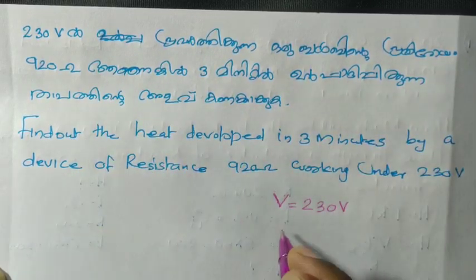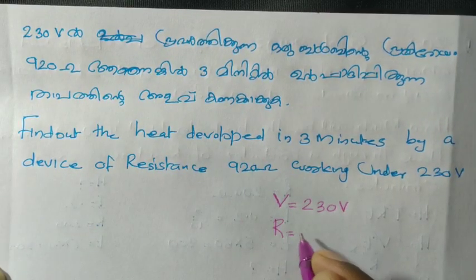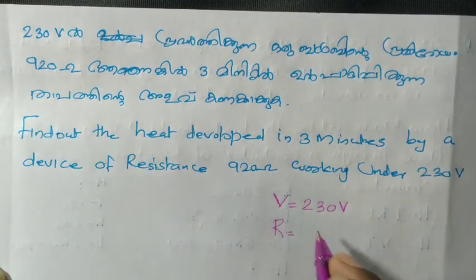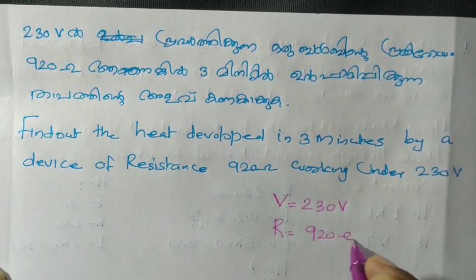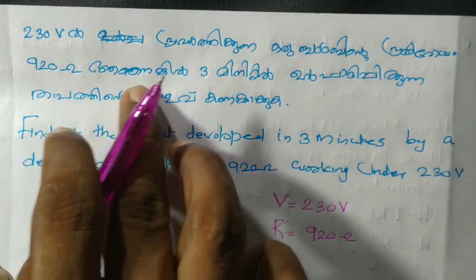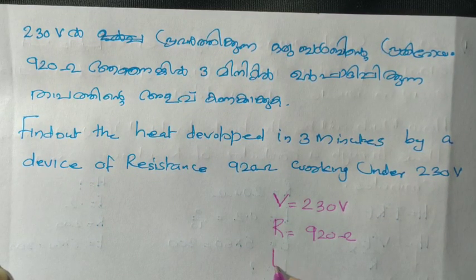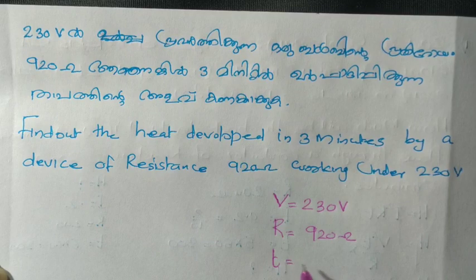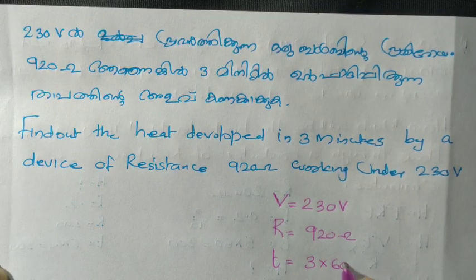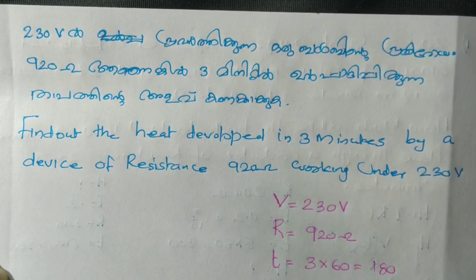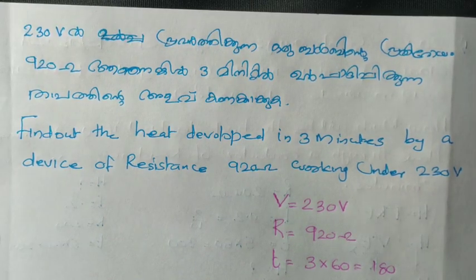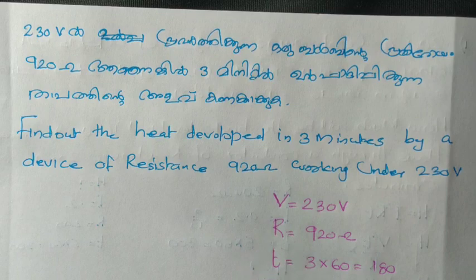R is equal to 920 Ohm. Time T is 3 minutes, which equals 3 into 60, so T equals 180 seconds. We are given V, R, and T.